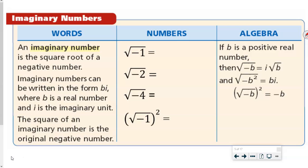An imaginary number is the square root of a negative number. Imaginary numbers can be written in the form bi, where b is the real number and i is the imaginary unit. The square of an imaginary number is the original negative number. The square root of negative 1 is i. When we take the square root of negative 2, we factor it: square root of negative 1 times square root of 2, which gives i times square root of 2.